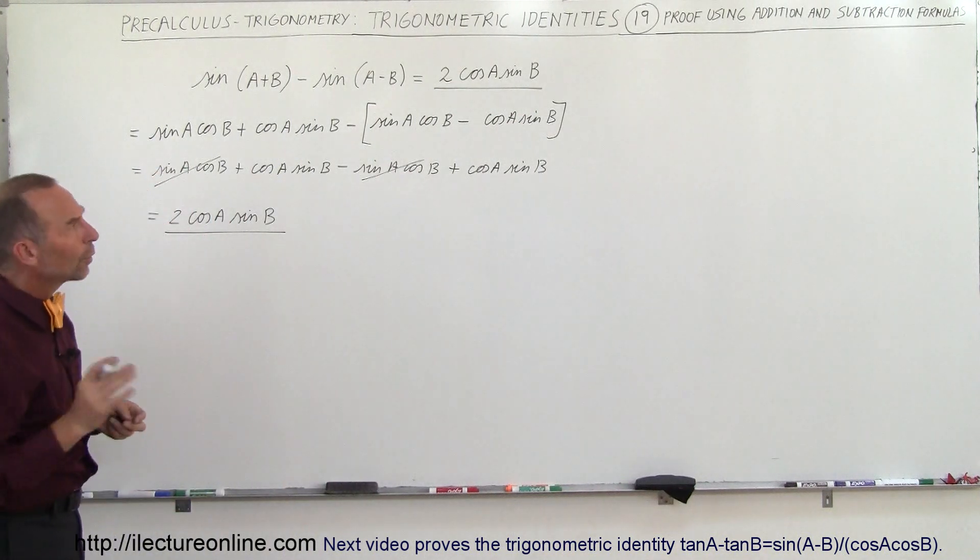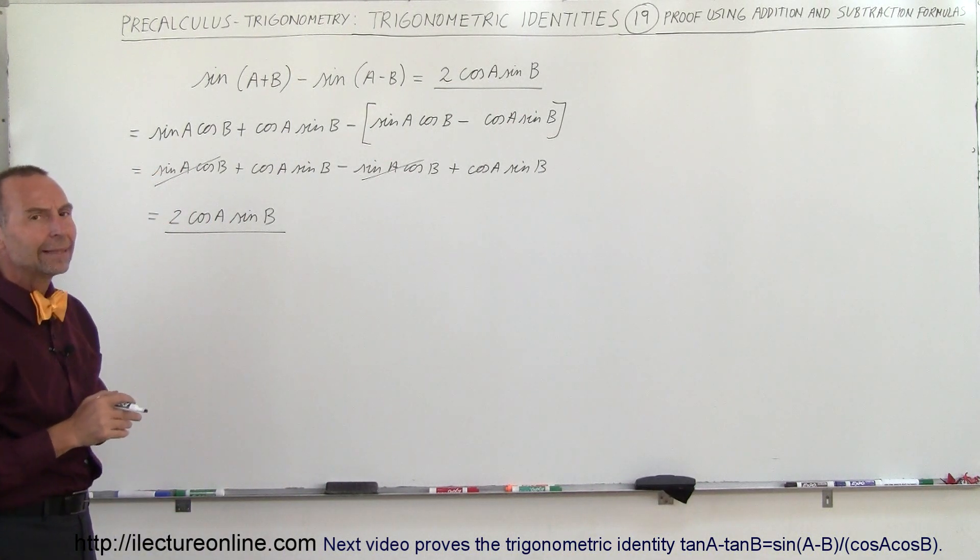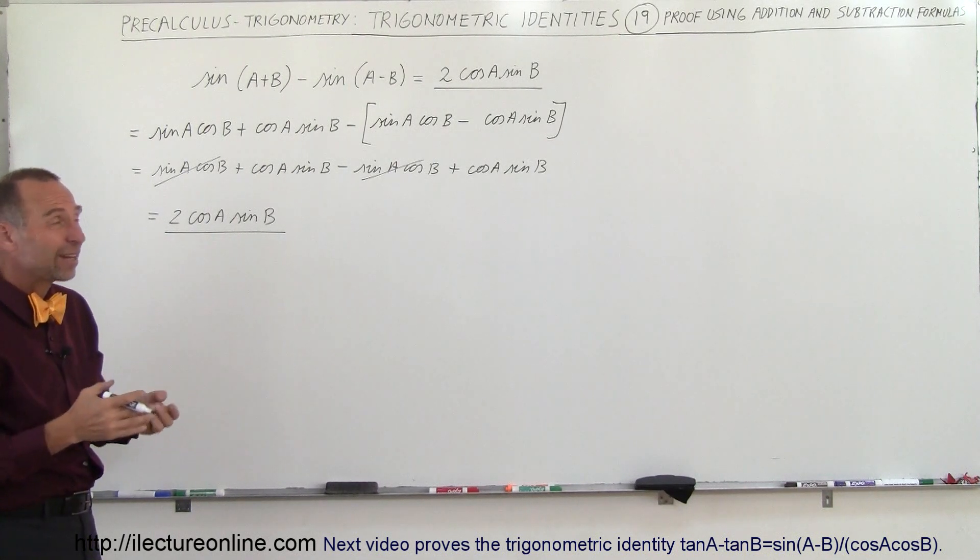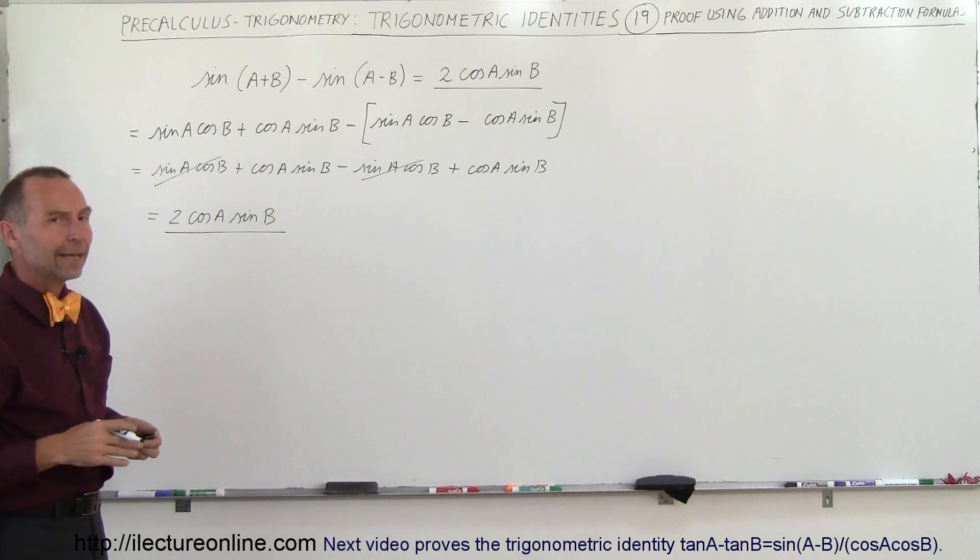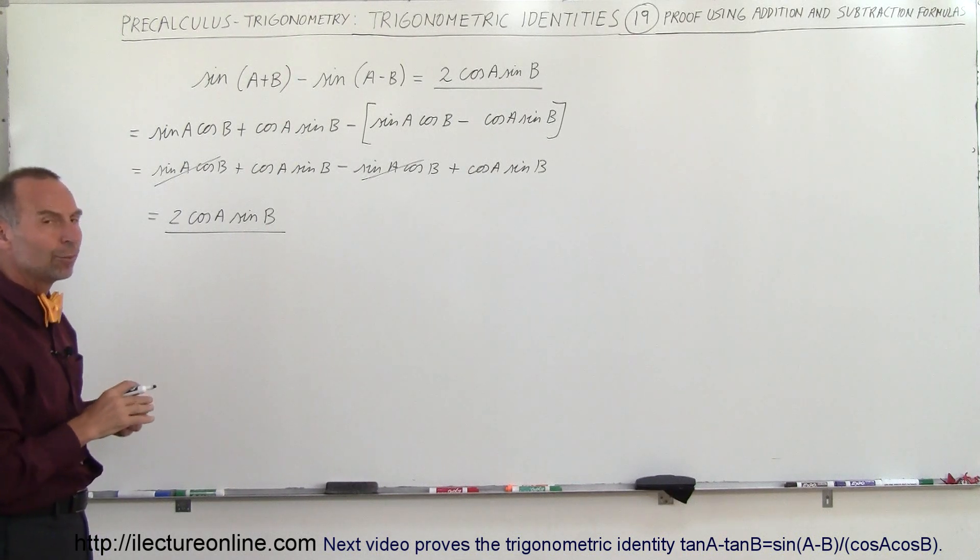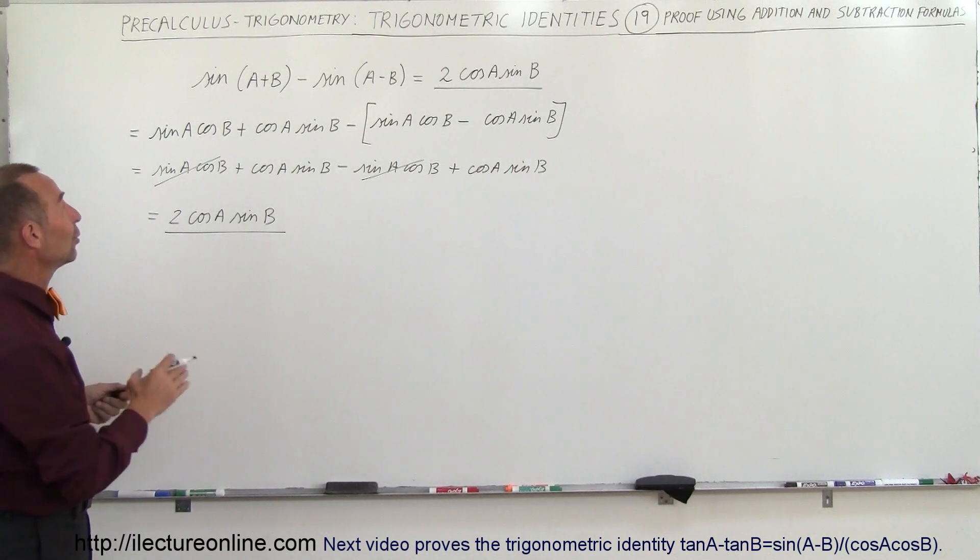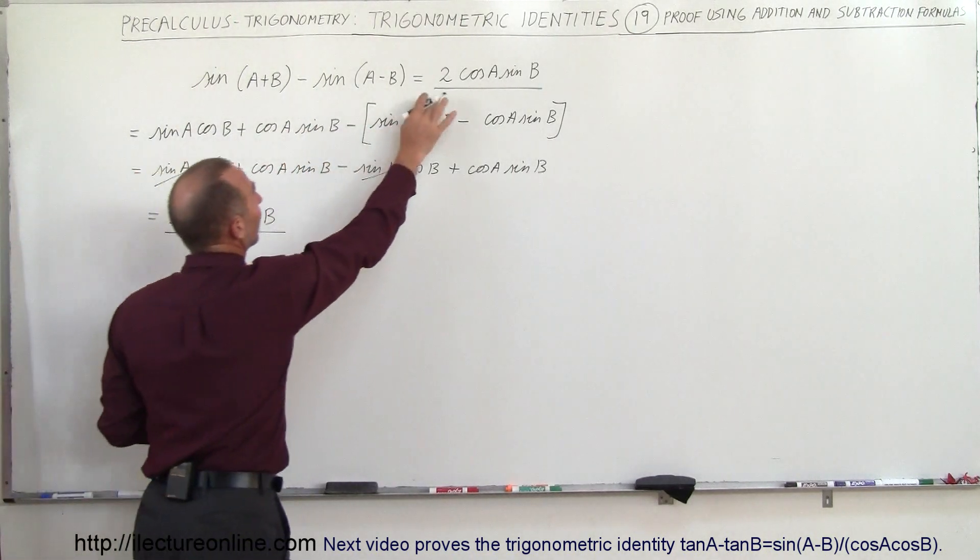Now where we're going with this is what if we had A plus B, instead of A plus B, A plus A, or the sine of twice the angle A. And that's what the double angle formula is all about. So that's the precursor to that which is coming. But now at this point we're satisfied with knowing that this is equal to that.